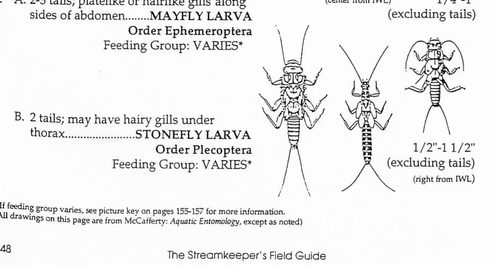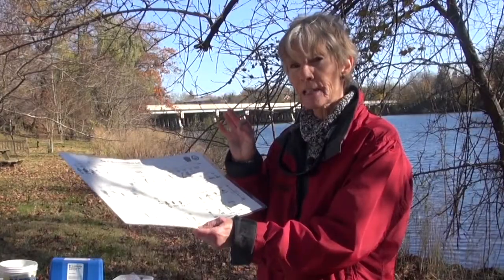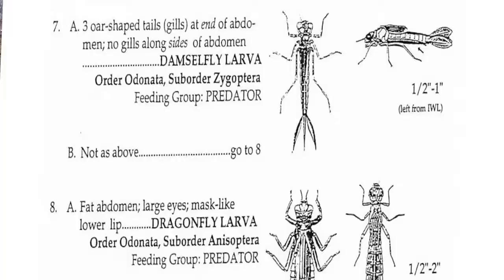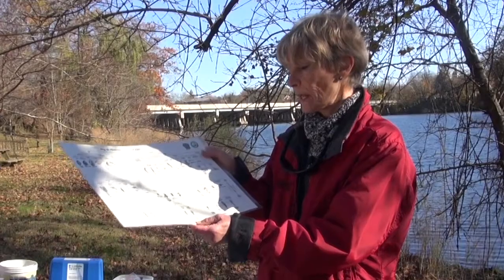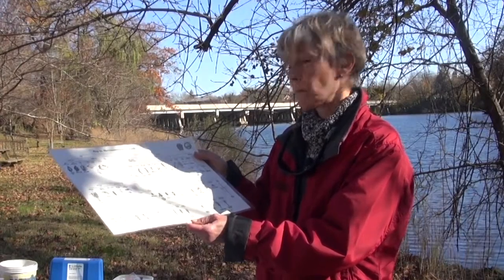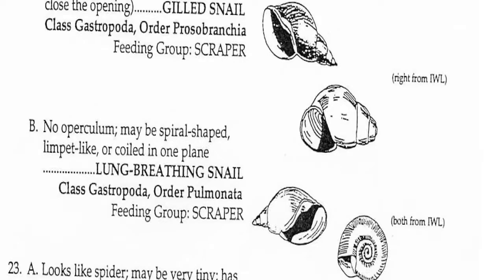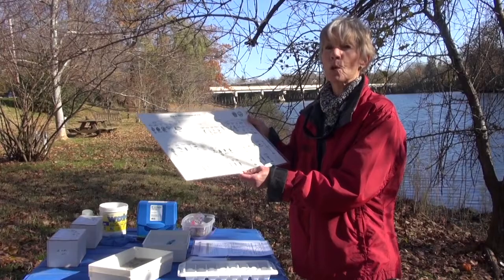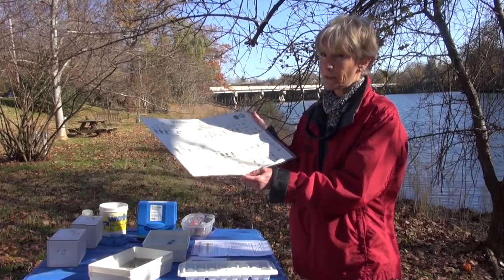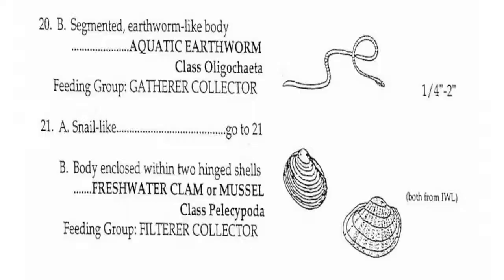We can also identify them by the size of their eyes. The big compound eyes on damselflies and dragonflies indicate that they are predators. We can identify them by whether they have a shell or not — for example, we have different kinds of snails. Our worms are very easy to identify, but we do have to look at the different kinds of worms.